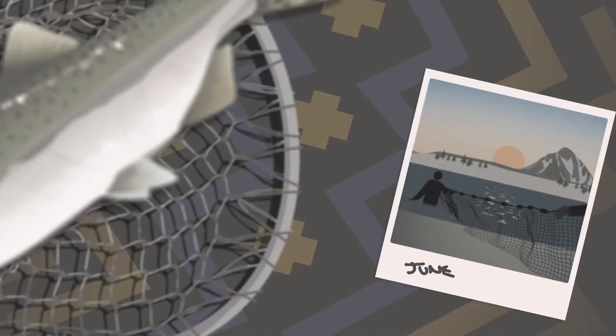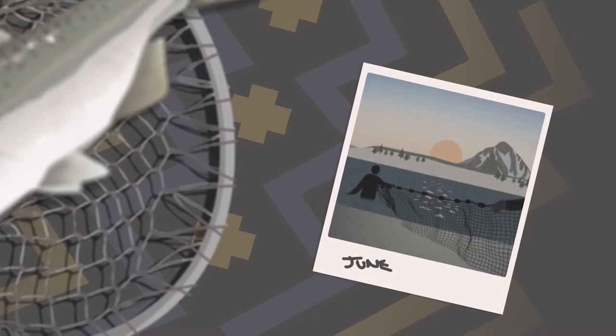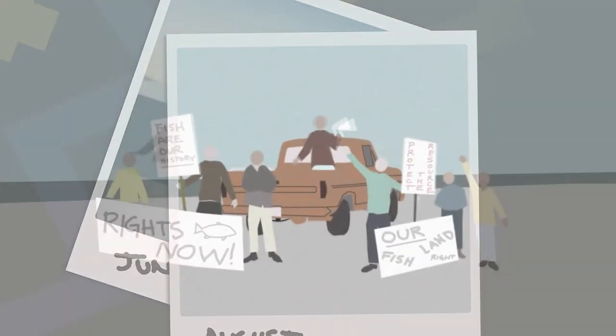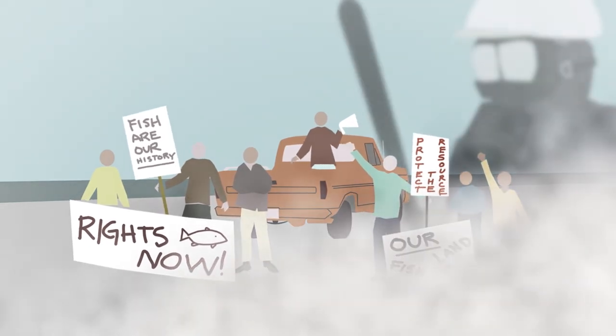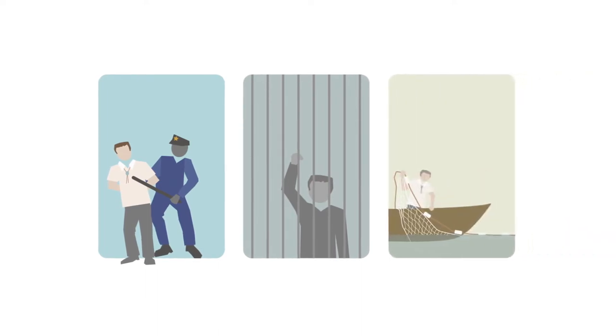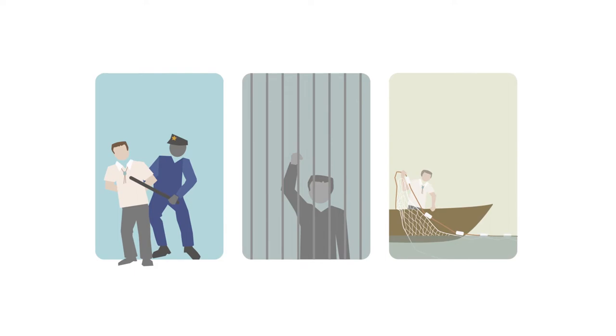Tribal fishers protested by continuing to fish off their reservations. Things got ugly, really ugly. Tribal fishermen and women were tear-gassed and beaten. They were illegally arrested. But when they got out, some fishermen like Billy Frank Jr. and others went right back to fishing, only to be arrested time and time again.